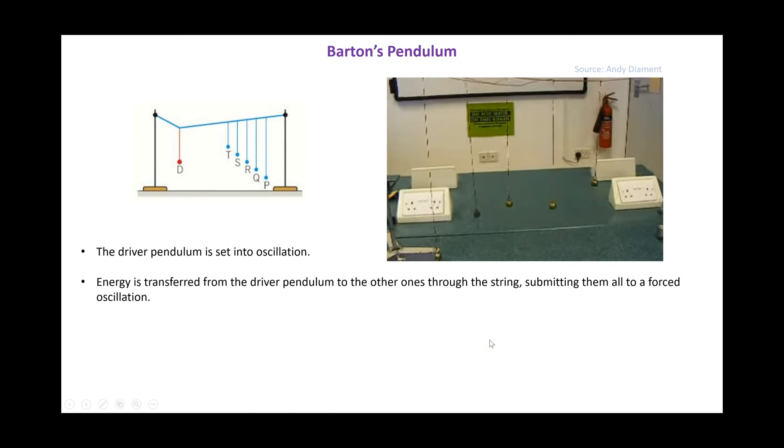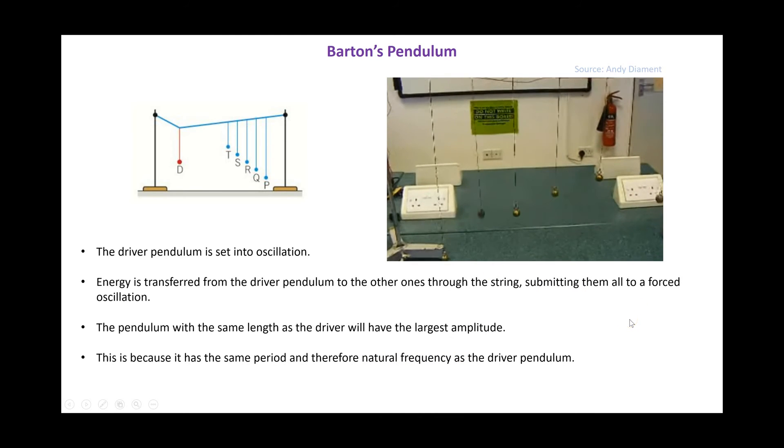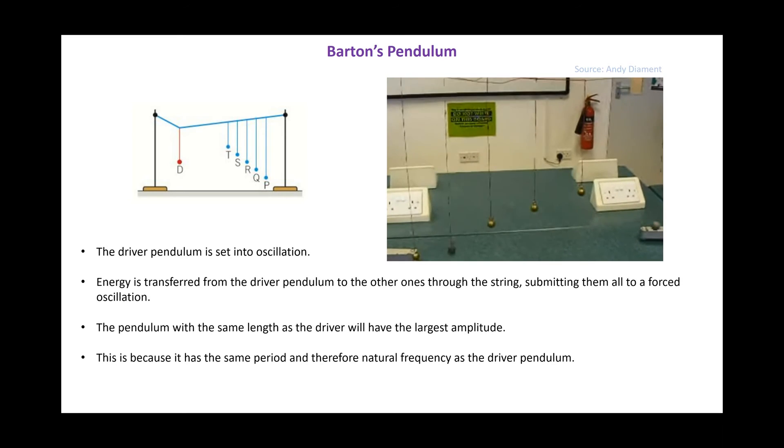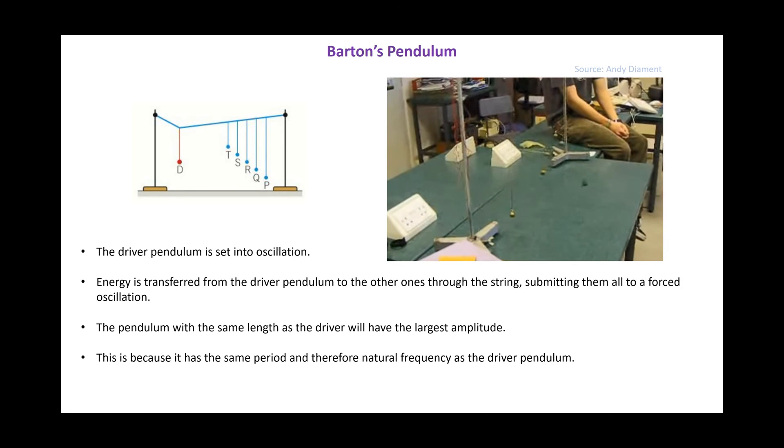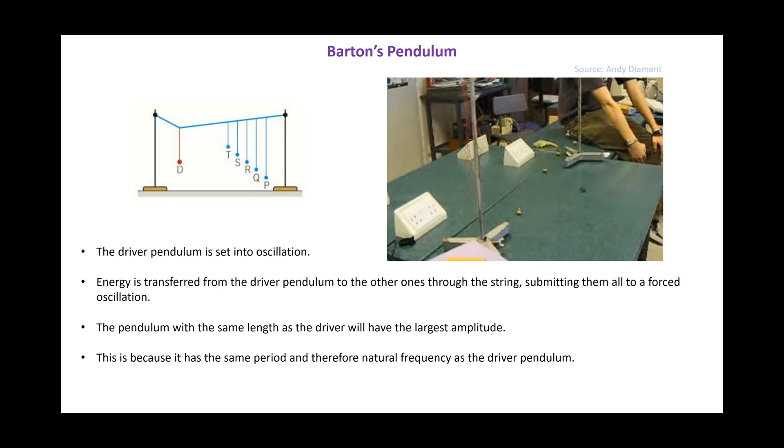We can see that the amplitudes of these oscillations vary. The pendulum that has the same length as the driving pendulum, in this case the black one, will have the largest amplitude. And that's because it has the same period, and therefore natural frequency, as the driver pendulum. So here we can see that the black pendulum is really swinging, far more than the others. And when we change the perspective on the video, you can see just how marked that increase in oscillation is, that increase in amplitude. And that's because the black pendulum has the same length, and therefore natural frequency, as the driver. So it is in resonance with the driving pendulum.